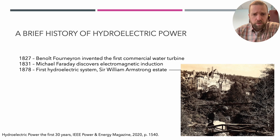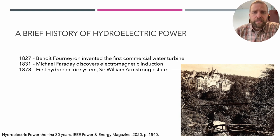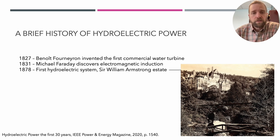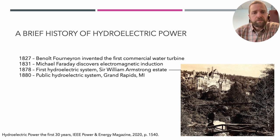The first hydroelectric system in 1878 was a private system at Sir William Armstrong's estate. Armstrong essentially used his estate as a playground for trying out new things, and one of those was a hydroelectric system to power lights. The generation system was about one or two kilometers away, and he ran wires up to the house to power lights — this was the first hydroelectric system.